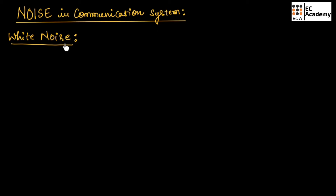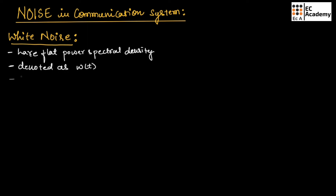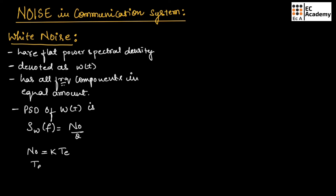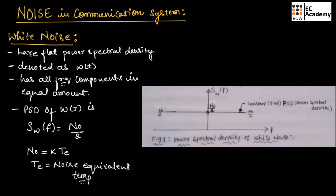White noise has flat power spectral density over a wide range of frequencies, and is also known as Gaussian disturbance, denoted as W(t). White noise contains all frequency components in equal amounts. The power spectral density of white noise is given as SW(f) = N₀/2, where N₀ = KTE and TE is the noise equivalent temperature. As shown in the figure, the power spectral density is flat or constant for a wide range of frequencies.